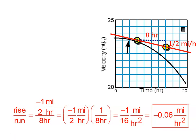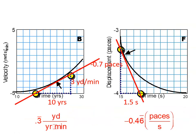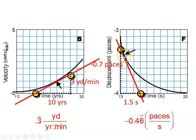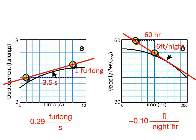Remember, acceleration is the rate at which the velocity is changing. A couple more examples: in the first example we have about 0.3 yards per minute per year, and in the second example we have about negative 0.47 paces per second for the slope at that point. In each case, we drew tangent lines, found two points where the tangent line crossed grid lines on the graph, and then used those points to calculate the slope. And you can do the same thing for other examples as well.